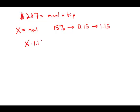X times 1.15 equals the price with the tip, 207. So to find the price without the tip, the original price X, we have to divide 207 by 1.15.